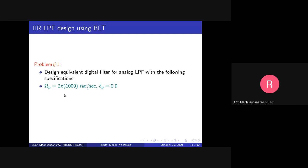This is the passband specification for the low pass filter: omega_p equals 2π × 1000 radians per second, or 1 kHz. The minimum passband gain required is 0.9. The stopband cutoff frequency is 2π × 1200 radians per second (1.2 kHz), and the maximum allowed stopband gain is 0.1.